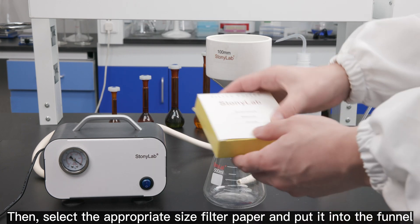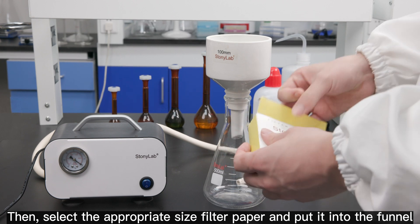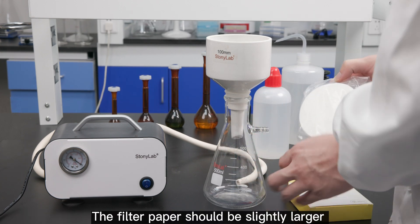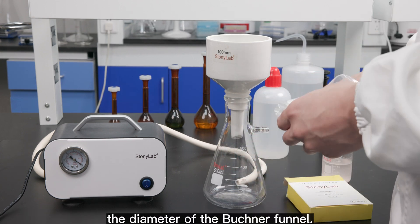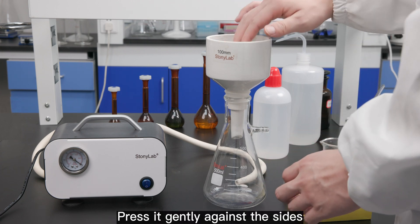Then, select the appropriate size filter paper and put it into the funnel. The filter paper should be slightly larger than the diameter of the Buchner funnel. Press it gently against the sides.